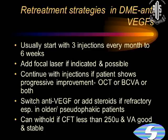If you are not getting a response, you can switch anti-VEGF or add steroids if it is refractory. Especially in older or pseudophakic patients we are not hesitant to employ steroids in addition. Once you have achieved a central foveal thickness of less than 250 microns and visual acuity is good — say 6/9 or better and stable — then you can withhold treatment unless there is recurrence.